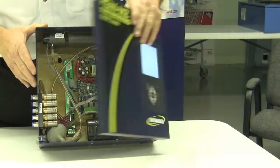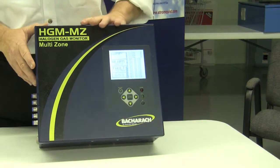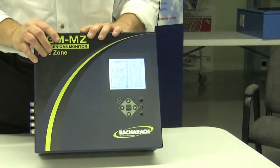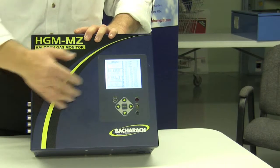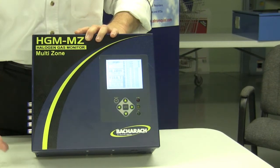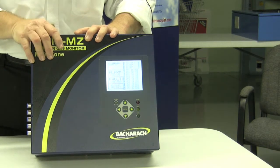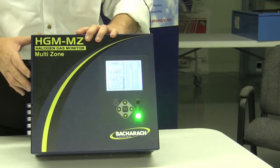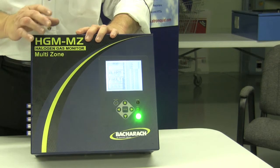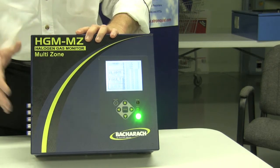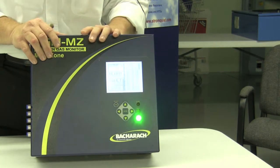So the Bacharach monitor, once again, comes in 4, 8, 12, and 16 zone configurations. It's front programmable, information downloadable, expandable, and will reach out 1,200 feet on each zone so that it makes it the most versatile, the widest ranging, and the fastest monitor out there today.